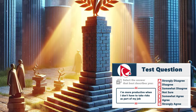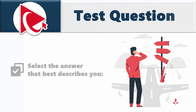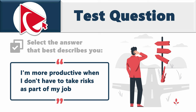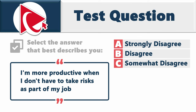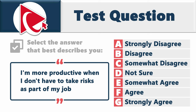You need to select the answer that best describes you for the following statement: 'I am more productive when I don't have to take risks as part of my job.' Choices: A: strongly disagree, B: disagree, C: somewhat disagree, D: not sure, E: somewhat agree, F: agree, G: strongly agree.